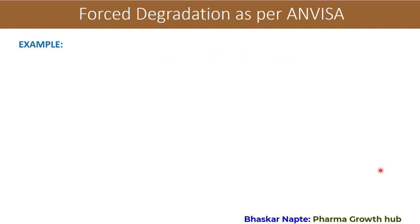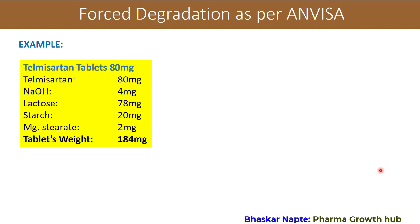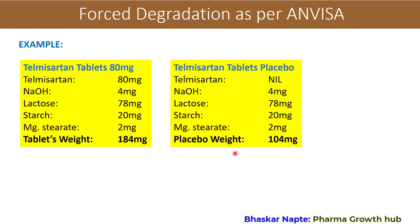Let us understand the study design with two examples. The first example is a Telmisartan tablet with 80 mg label claim. This tablet contains Telmisartan 80 mg, sodium hydroxide 4 mg, lactose 78 mg, starch 20 mg, and magnesium stearate 2 mg — a hypothetical formulation with a total tablet weight of 184 mg. The placebo is the same excipients excluding the drug substance Telmisartan, giving a placebo weight per tablet of 104 mg.